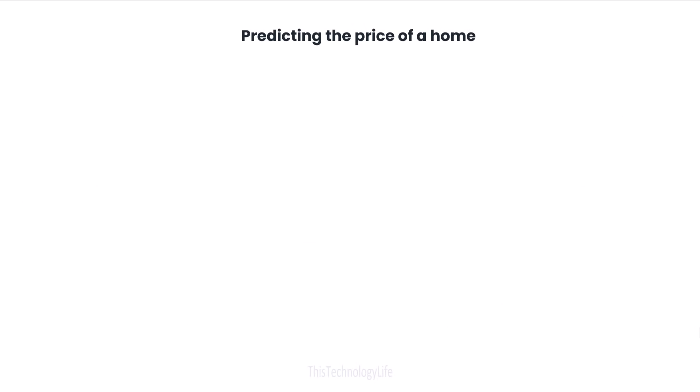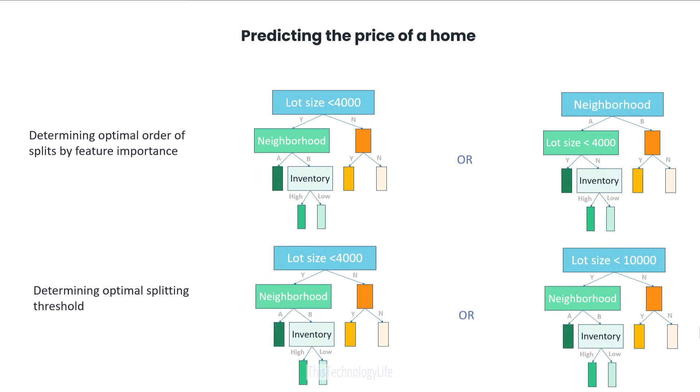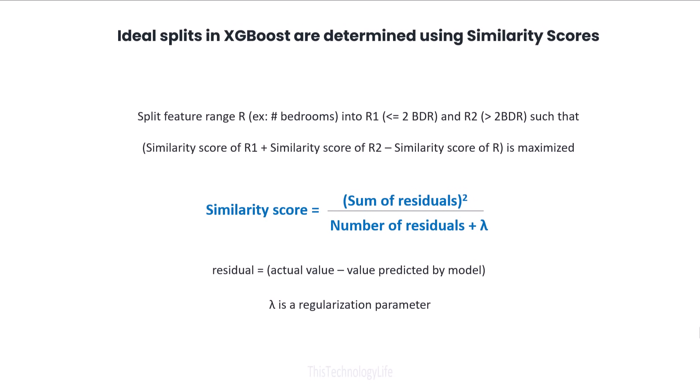The XGBoost library performs these splits by determining first the optimal order of the splits by feature importance, and second the optimal threshold for each split. The decision points and splits will be those that lead to the greatest increase in a measure called the similarity score.